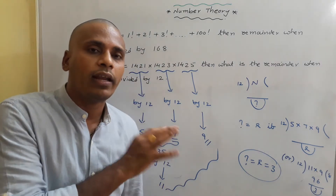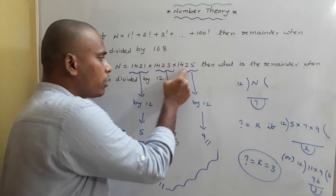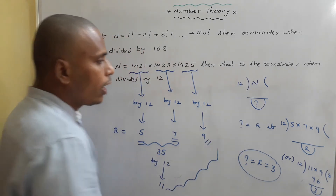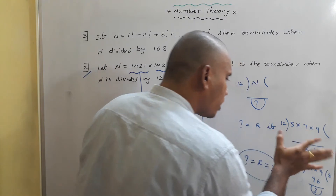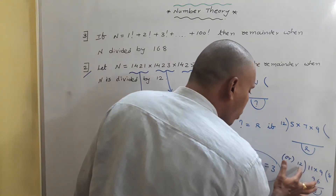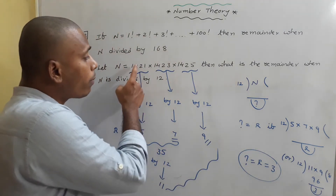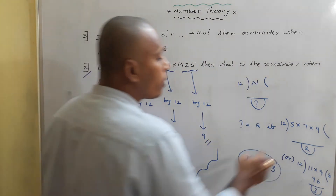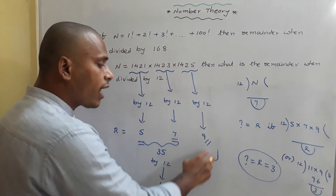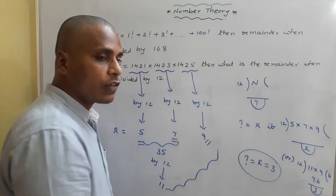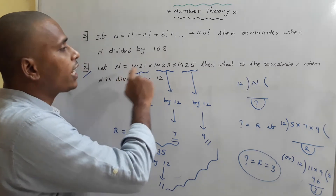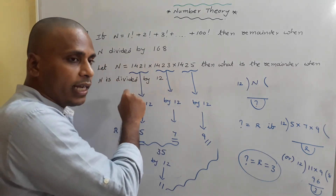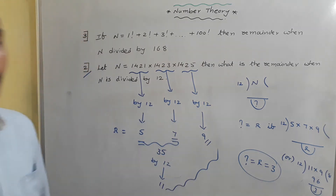If you divide the product of these three numbers by 12, you get 3 as the remainder. This is the way to find the remainder when a product of numbers is divided by a divisor. Every problem gives you a certain conceptual idea along with the application approach.